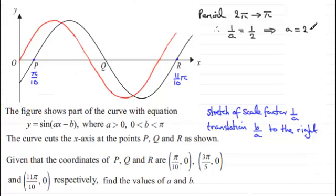Now we're going to translate this graph, the red graph, to the right by pi over 10 units. And so that means that our translation factor, b over a,